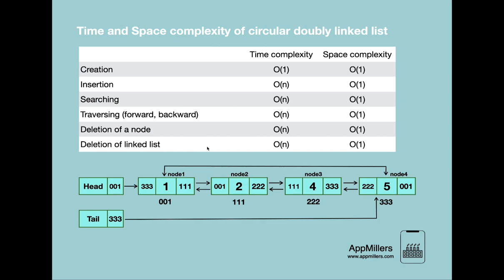The last operation is deletion of the entire linked list. This takes O(n) time complexity because we have to visit each node of the circular doubly linked list to update its previous reference to null, traversing through the entire list. The space complexity is O(1) because no additional space is required.